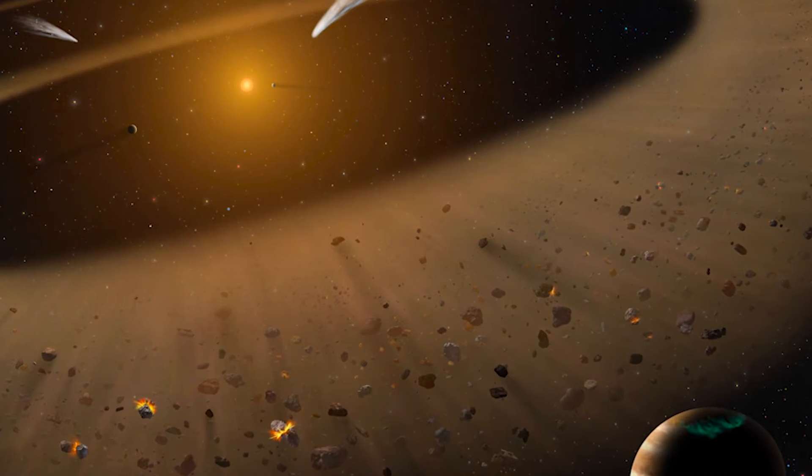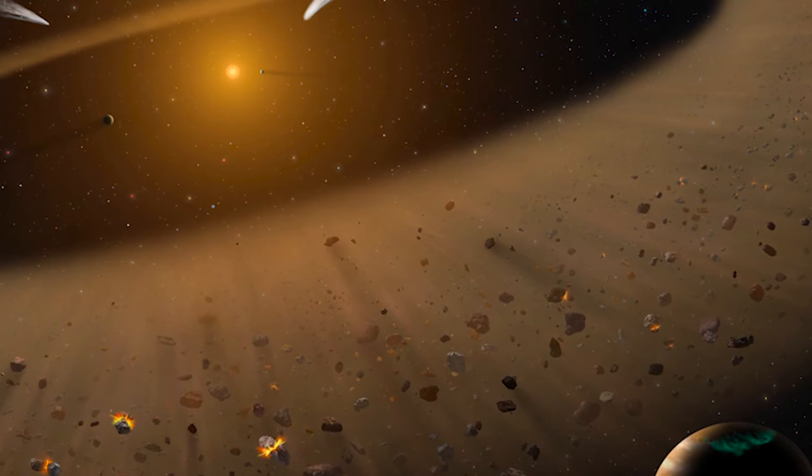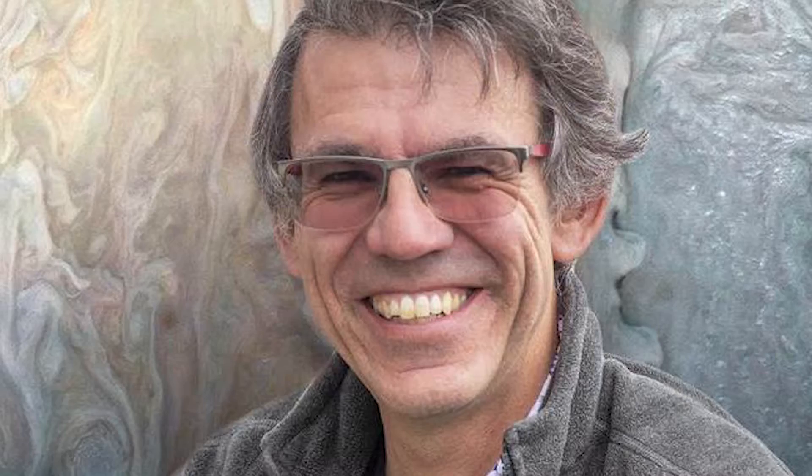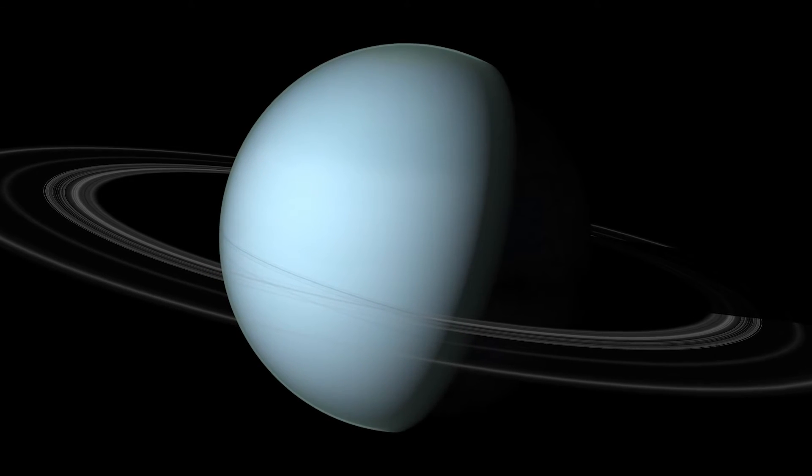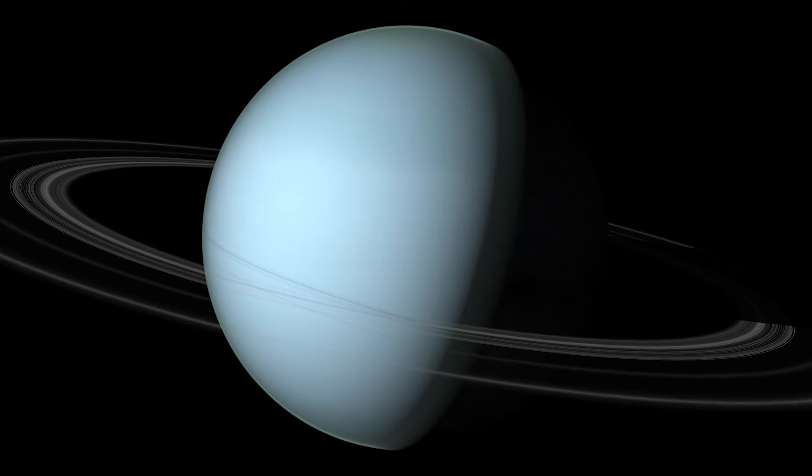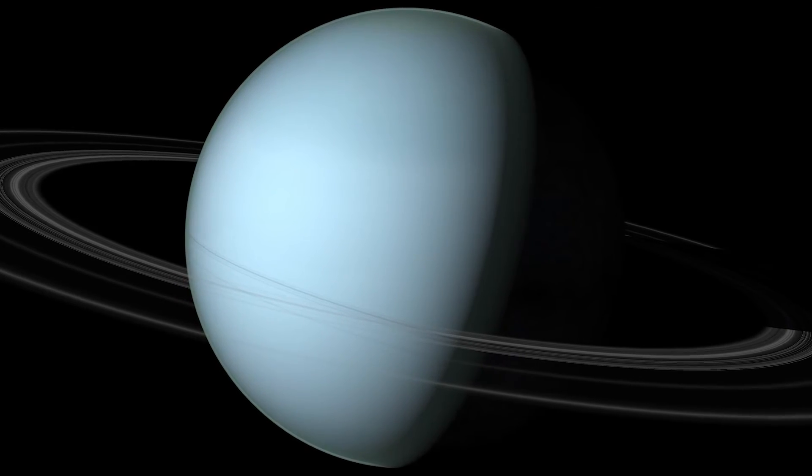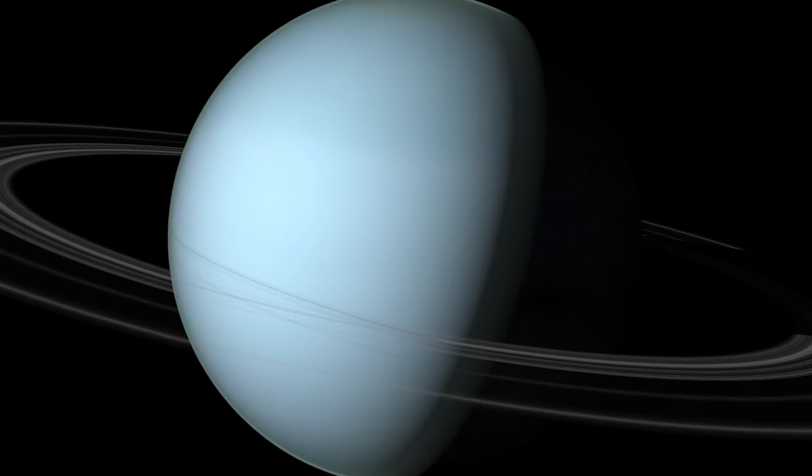The early solar system thus may have been a more volatile and more violent place than previously thought. Morbidelli and his team not only created the best hypothesis for this theory, but they also shed light onto the early solar system, describing for the first time how truly violent it probably was back then.